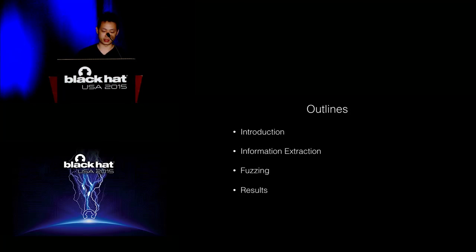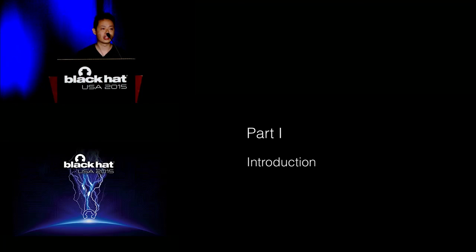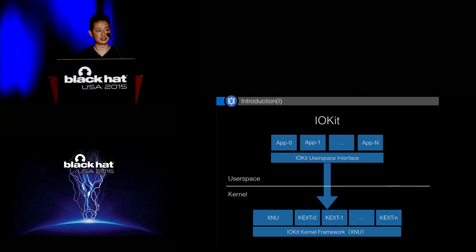In my presentation, first it's the introduction of our work. Then, a dynamic approach to export information about IOKit classes is given out — this is the key point of my presentation. Based on the extracted information, we also craft an application to fuzz IOKit in iOS. And last, I will show several vulnerabilities as a result. In iOS, IOKit is the bridge to connect user space and kernel, and also the foundation to construct and link a kernel extension. So, information extracting of IOKit in kernel extensions is crucial to fuzzing IOKit in iOS.